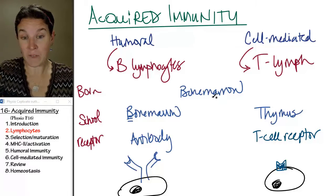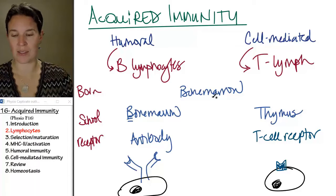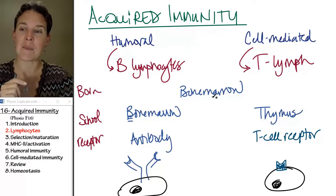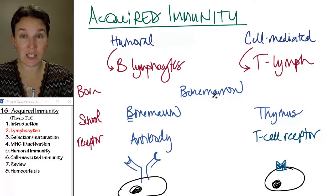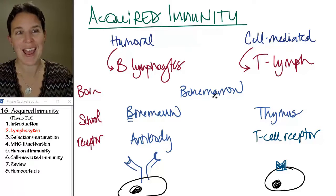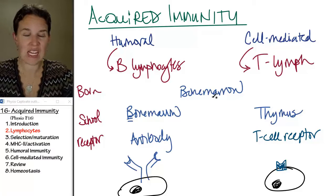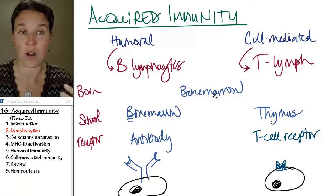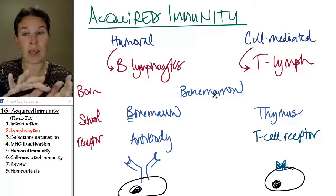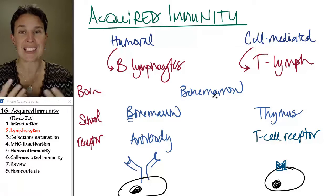That specific molecule is designed so that at some point it can identify a particular molecule on a pathogen. Once it has identified that pathogen molecule, it can initiate a seriously nuclear-war-level attack that is super effective. The humoral immune response does it one way, the cell-mediated response does it another way, but both are super powerful — and together, even more so.